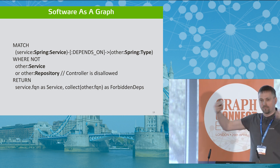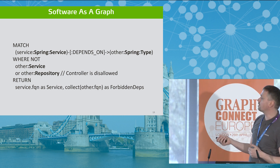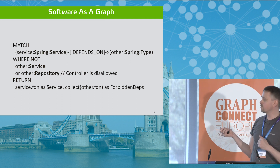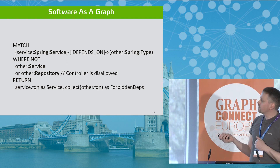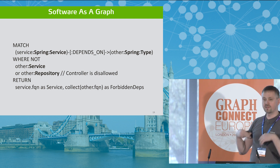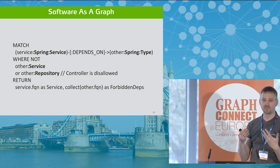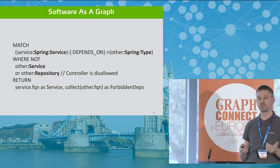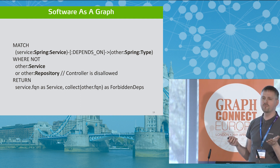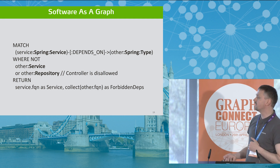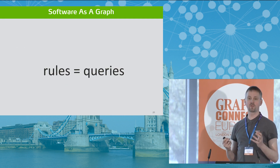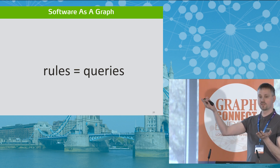A bit more abstract, focused on architecture: give me all the Spring services which somehow depend on other Spring types, where those other Spring types are not services or repositories — and give me that as a violation of wrong dependencies. So you can check your architecture on classes, packages, even modules, whatever you want. The rules are just expressive Cypher queries based on abstract concepts.